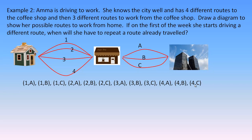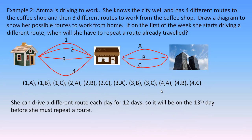If you count them, there are 12 possible ways she can get from her home to her workplace. The question says if she starts driving a different route every day at the start of the week, when will she have to repeat a route already traveled? Since she has 12 different routes, it would actually be the 13th day before she would have to repeat one.